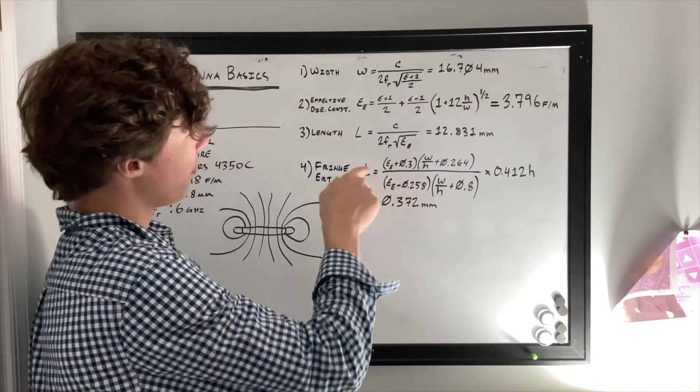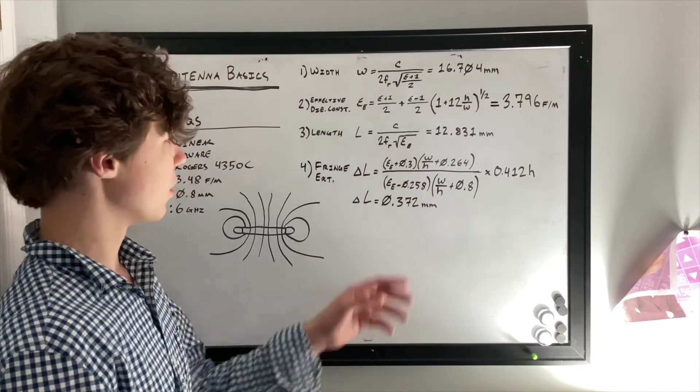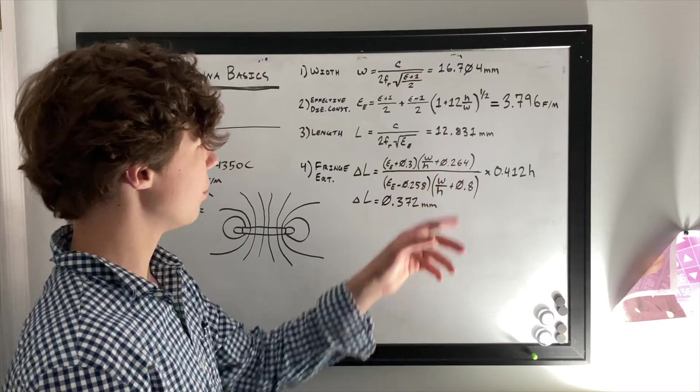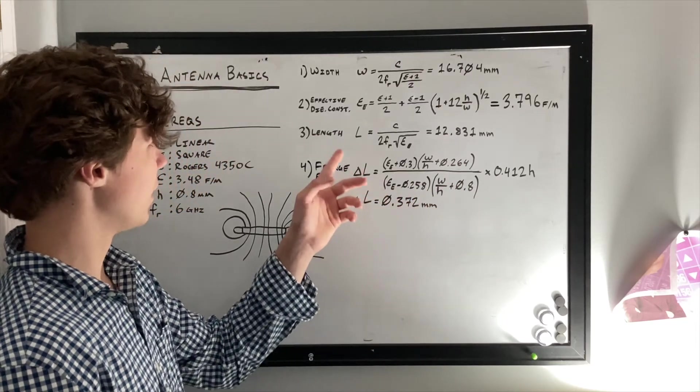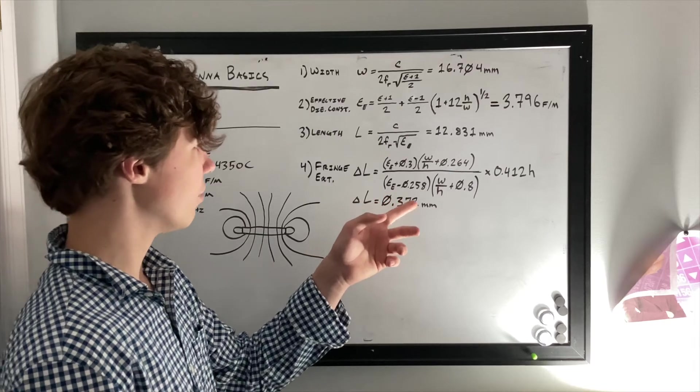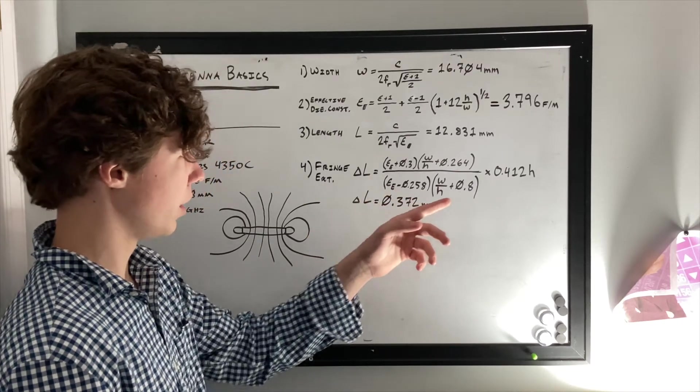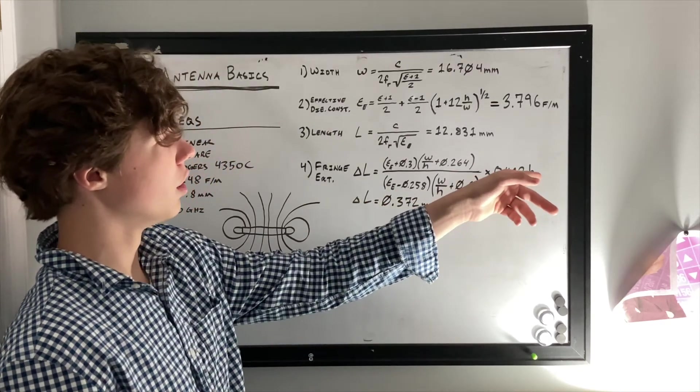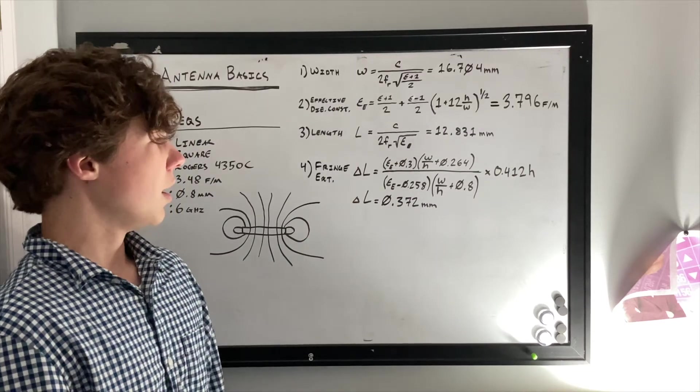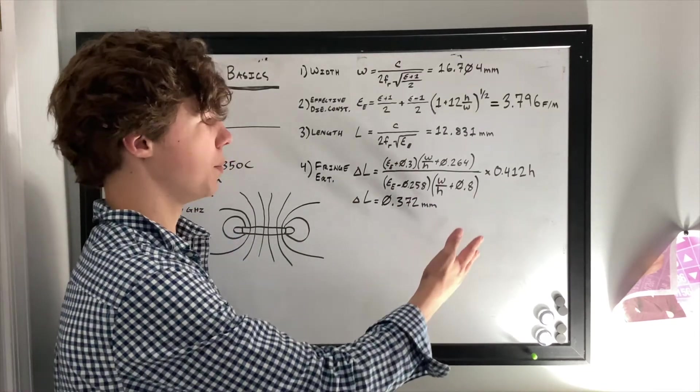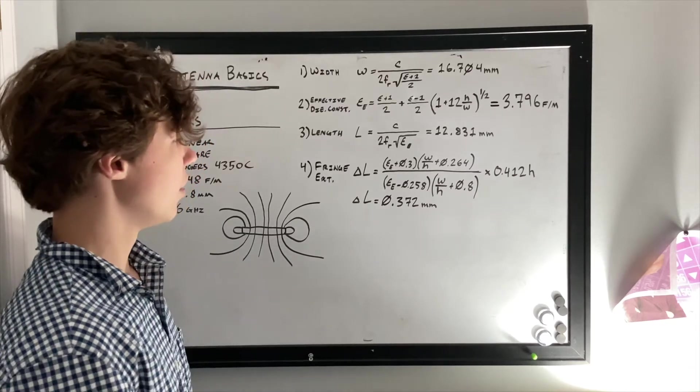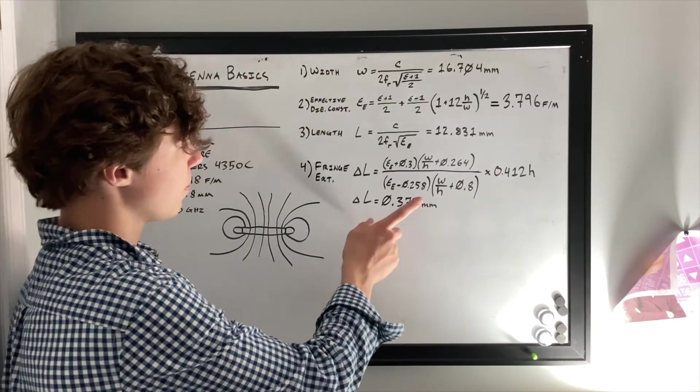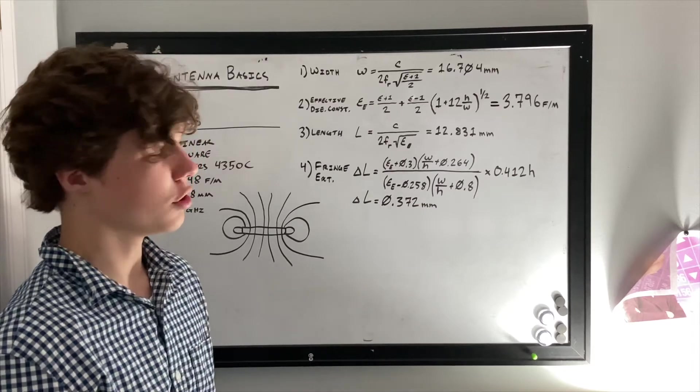But it's effectively the effective dielectric constant plus 0.3 times width over height plus 0.264 divided by the effective dielectric constant minus 0.258 times width over height plus 0.8 times 0.412 times the substrate height. It's a mouthful. All of it should be in the same unit, either millimeters, centimeters, meters, it should all be uniform if you want a uniform answer. And for this, we got 0.372 millimeters.